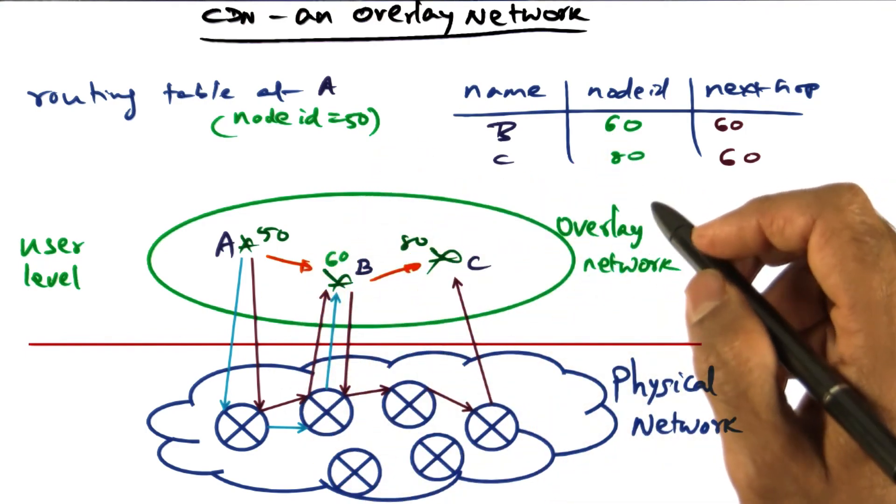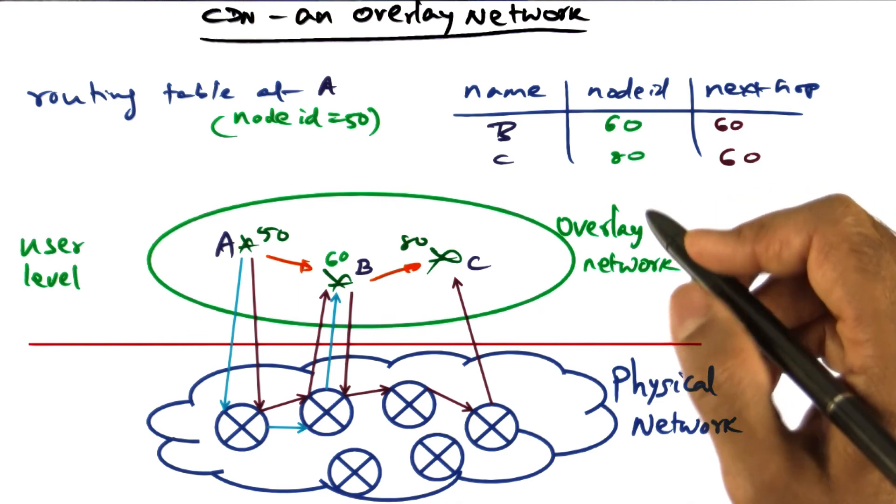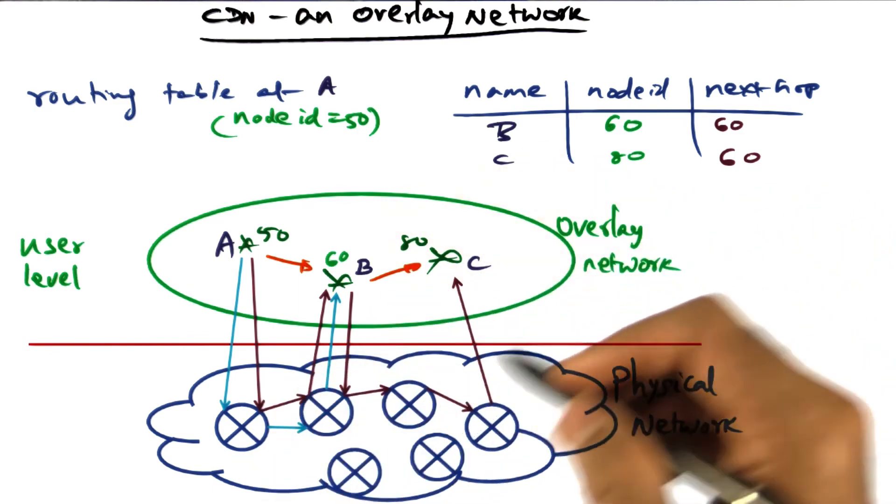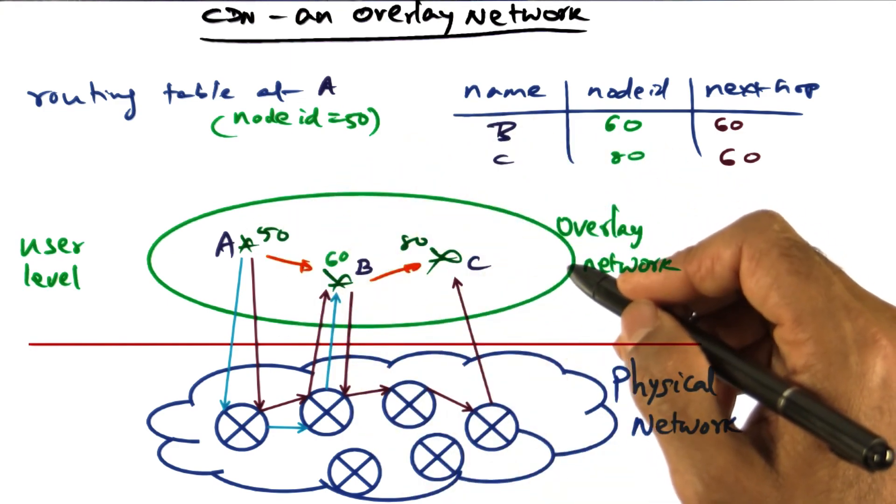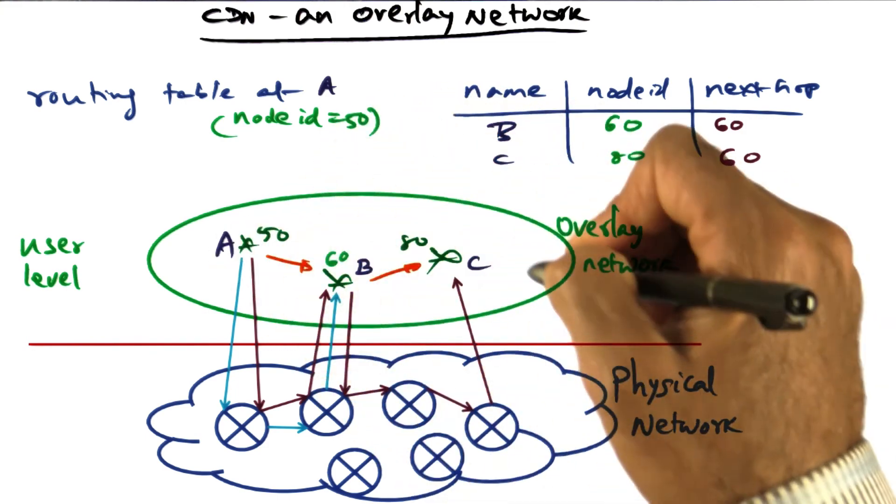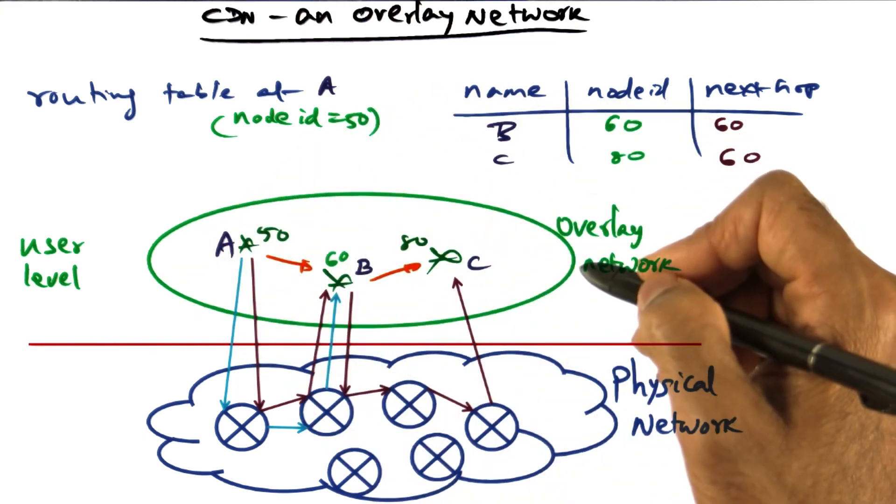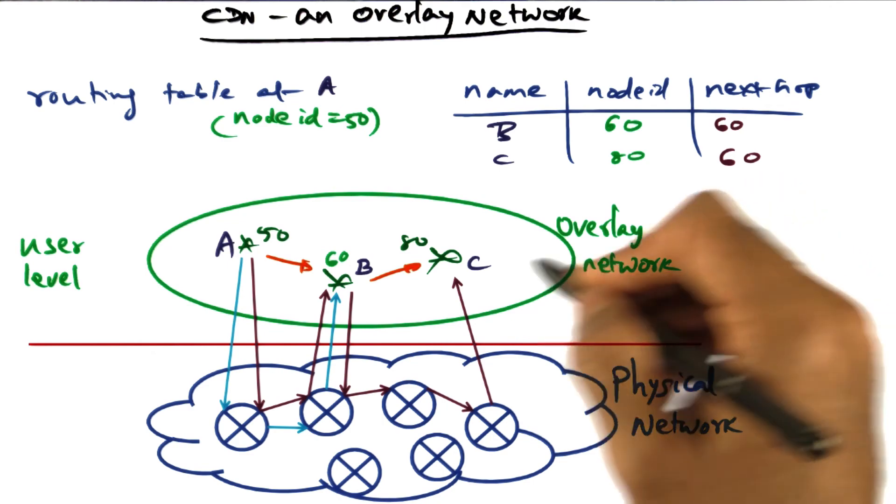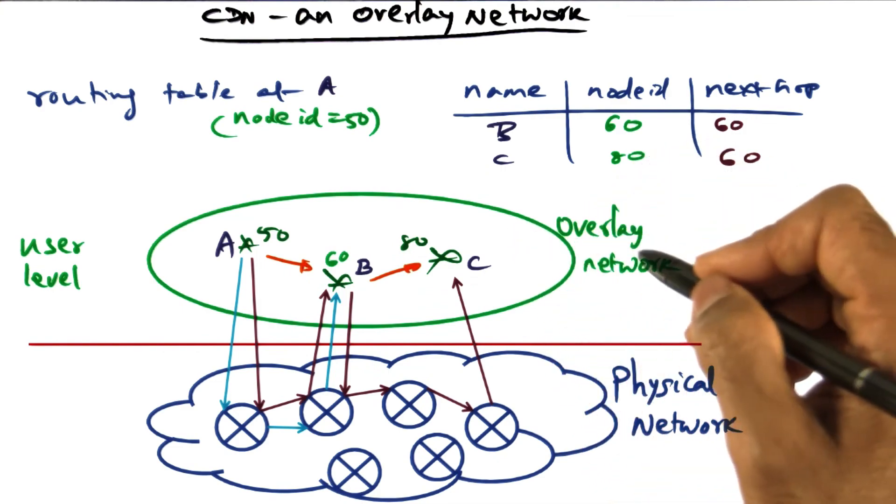That's what an overlay network is—a virtual network on top of the physical network. And this particular overlay is a content distribution network because it allows content to be shared and distributed among users who have exchanged information with one another, so they can discover one another, if not directly, then indirectly through friends of friends.